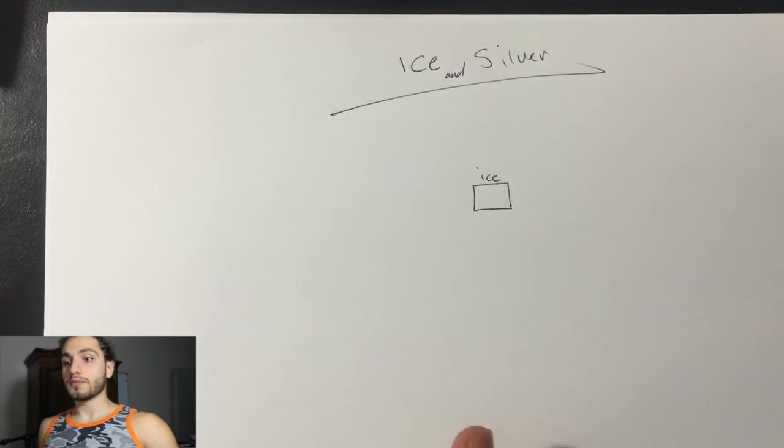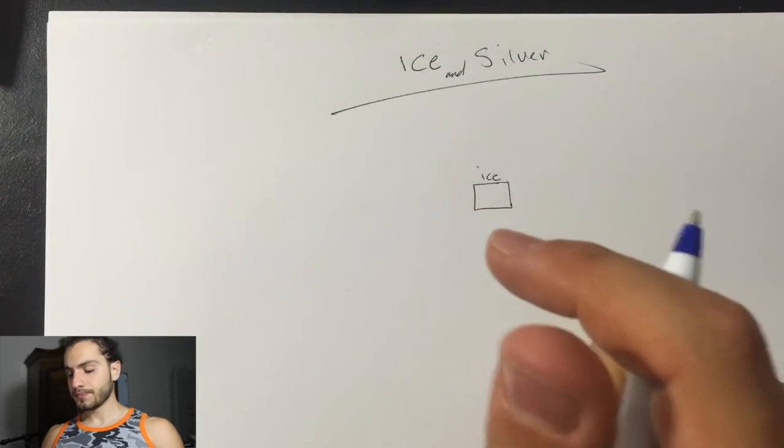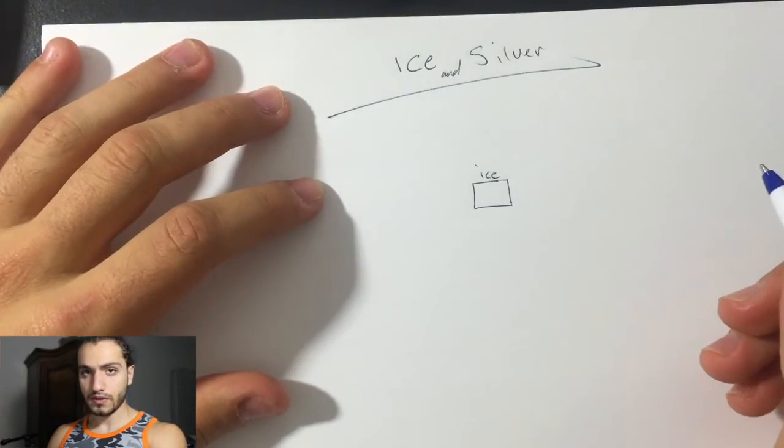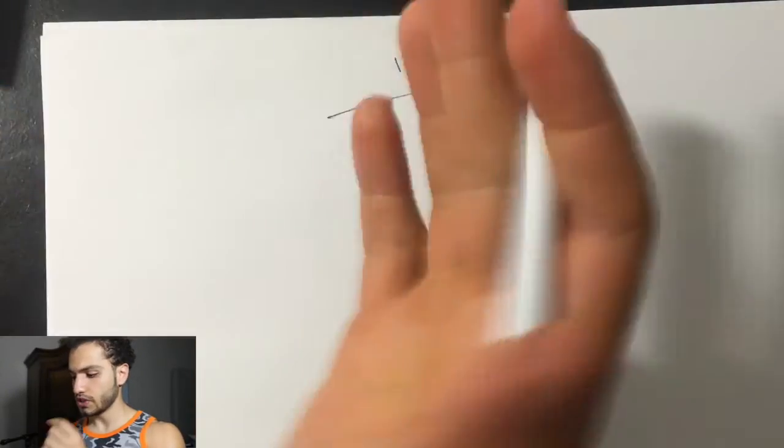What's up guys, this is Walid. This problem is the ice and silver. That's a really basic problem too. Just a lot of math and just switching variables.